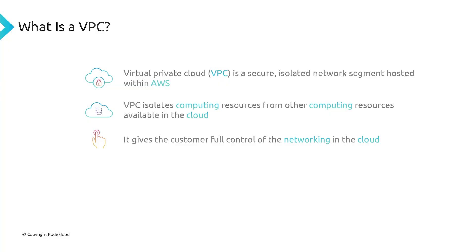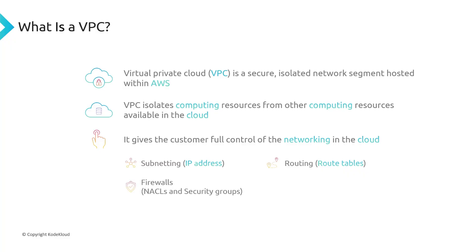Just like you would have in an on-premises data center where you have your switches and routers and configure all of the routing, rules, and policies — within AWS, the same thing happens. You get access to all of the subnetting and IP addresses, so you get to decide what IP addresses are assigned to what applications or hosts. You have access to routing, so you decide how packets traverse through your AWS environment. You also have access to various firewall concepts within AWS like NACLs and security groups, as well as gateways that are responsible for making sure traffic is allowed to enter from the internet into your cloud environment and vice versa.